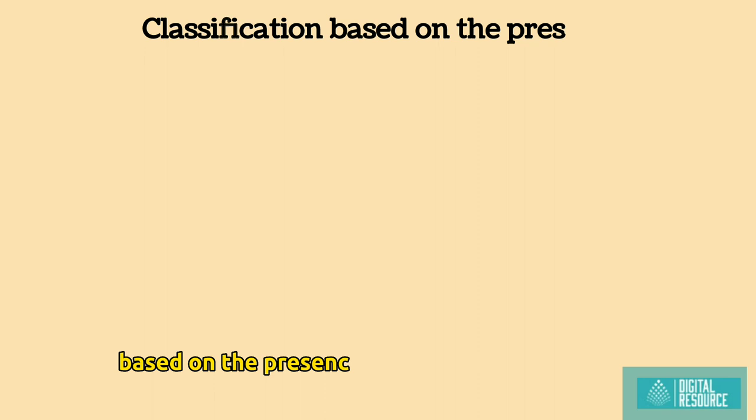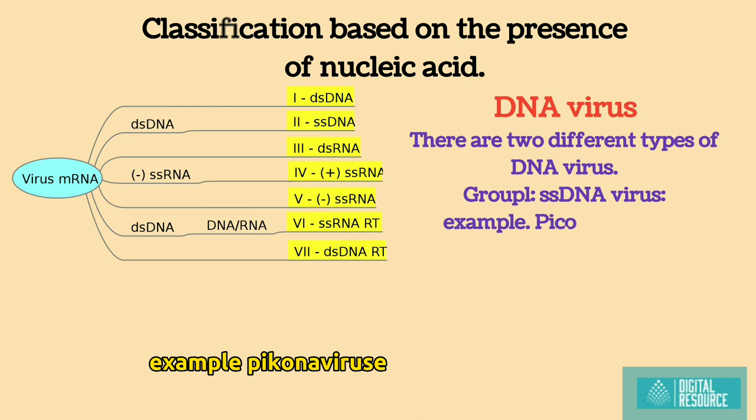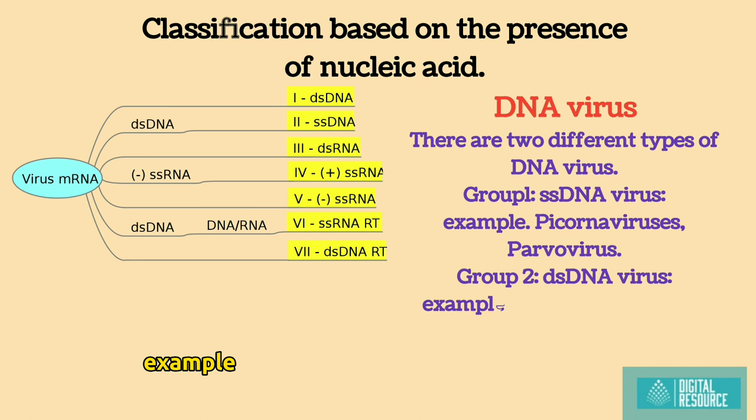DNA virus. There are two different types of DNA viruses. Group 1: single-stranded DNA virus, example: Picornoviruses, parvovirus. Group 2: double-stranded DNA virus, example: Adenovirus, herpes virus.